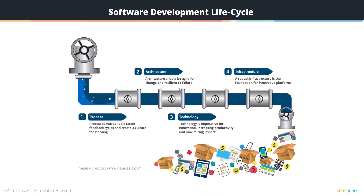This is how our software development lifecycle pipeline typically looks. You have processes that must enable faster feedback cycles and create a culture for learning. The architecture for your software development lifecycle should be agile for change and resilient to failure, and you should be able to take what you learn from what is failing back to your process faster and make the appropriate changes.